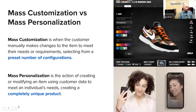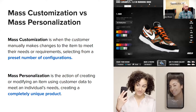Some definition terms around mass customization and mass personalization. I would describe mass customization as being an umbrella term — it really involves anything that is customized at scale. Mass customization is when the customer is manually making changes to an item to meet their specific requirements or tastes, typically selecting from a preset number of configurations. Mass personalization is a smaller sliver of that, where the action of creating or modifying the product is actually driven by the customer and their data, with the idea of meeting that individual's needs and creating a completely unique product.